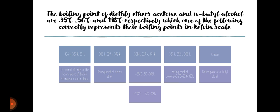The boiling points of diethyl ether, acetone, and butanol are given in Celsius. Which one of the following correctly represents their boiling points in the Kelvin scale? The boiling point of diethyl ether is 35°C plus 273 equals 308K. The boiling point of acetone is 56°C plus 273 equals 329K.